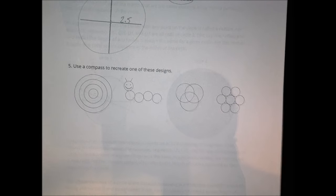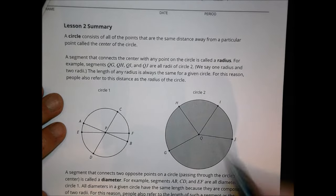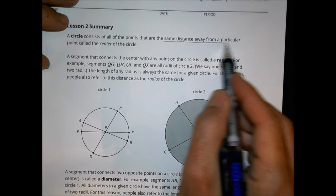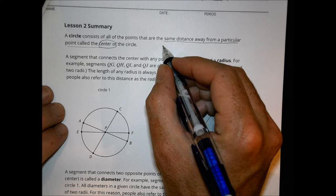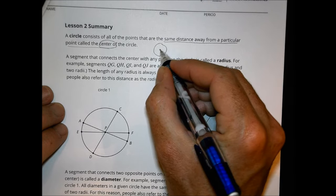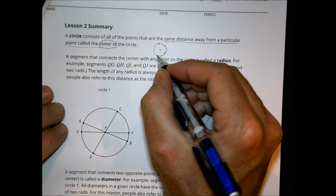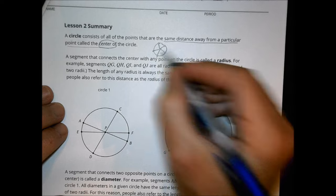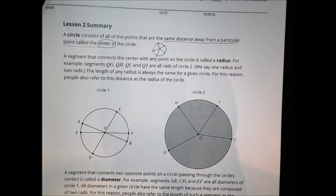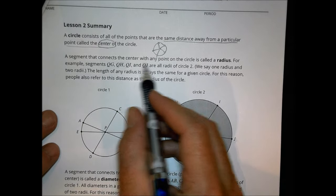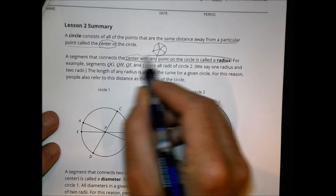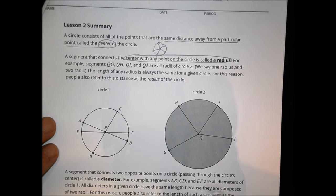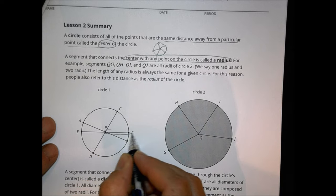The summary says: a circle consists of all the points that are the same distance away from a particular point called the center of the circle. It's all the points the same distance away from the center — that's what makes our circle. The segment that connects the center with any point on the circle is called a radius.